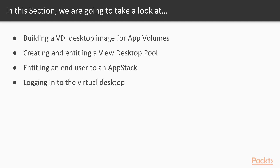We're going to start by looking at what you need in order to build your View VDI desktop image to work with App Volumes. Then we will create a desktop pool within View to deliver the new desktop image and entitle an end user to the pool as well as entitle that user to an app stack. Finally, we will log into the desktop and test that the end user can launch the App Volumes layered application.